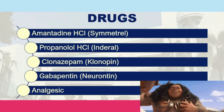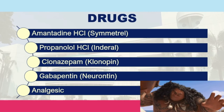Carbamazepine and tricyclic antidepressants are used for paresthesia. Amantadine hydrochloride, common brand Symmetrel, addresses fatigue — the major symptom in multiple sclerosis — which is related to CNS involvement. Propranolol (Inderal), clonazepam, and gabapentin can be used for cerebellar ataxia, which results in incoordination of muscle movements. Analgesics such as NSAIDs are given for pain.